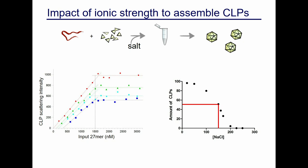We've done many experiments like this. As we vary salt concentration, we track what percentage of maximal CLPs are forming. The key parameter we call CLP50 is the salt concentration at which 50% of CLPs are being formed. Electrostatic interactions seem key because assembly is disrupted at higher ionic strength, and there appears to be a one-to-one molar ratio of capsid to cargo across all ionic strengths.